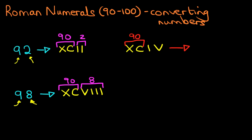And then we've got I and then V. So these two can be put together. I and V. So that is 4. So the XC is together. That is 90. And the IV is together. And that means 4. So XCIV is 94.